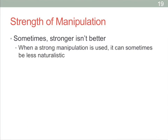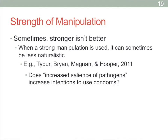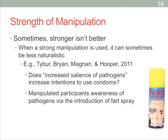Sometimes we talk about how strong manipulations are more naturalistic, but there are times when a really strong manipulation is actually less naturalistic. You have to think about it logically: does your manipulation match something that would happen in the real world? One example that came up a couple of years ago is a study — rather ridiculous — that was interested in whether increased salience of pathogens, basically making people think about illness and sickness, might increase intentions to use condoms. A reasonable manipulation might be a news article about STI transmission, but they went about it differently.